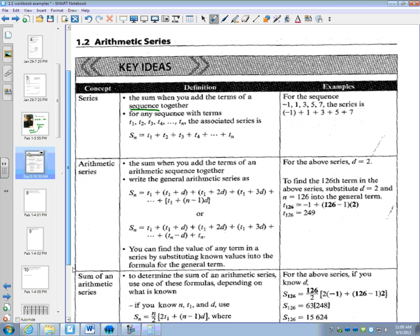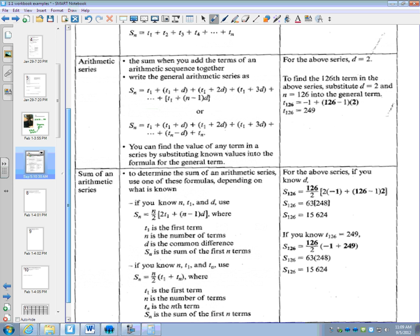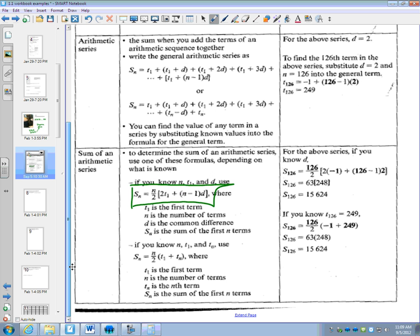Next thing that might be important is these two formulas. There's two formulas that can be used, and you use them depending on what information you know. When we're talking about series, we go Sn when we're talking about the sum. So remember before when we wanted the general term, it was Tn of a sequence.